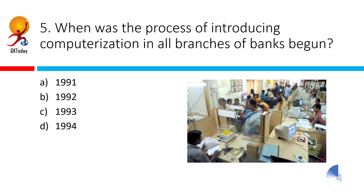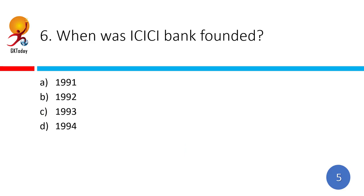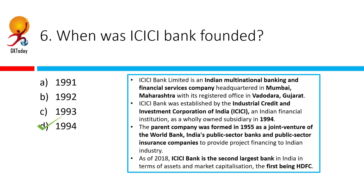When was the process of introducing computerization in all branches of banks begun? The correct answer is 1993. The first bank to have internet banking was ICICI, and the first bank to introduce ATM in India was HSBC. When was ICICI Bank founded? The correct answer is 1994. ICICI Bank is an Indian multinational bank and financial services company, founded in 1994.